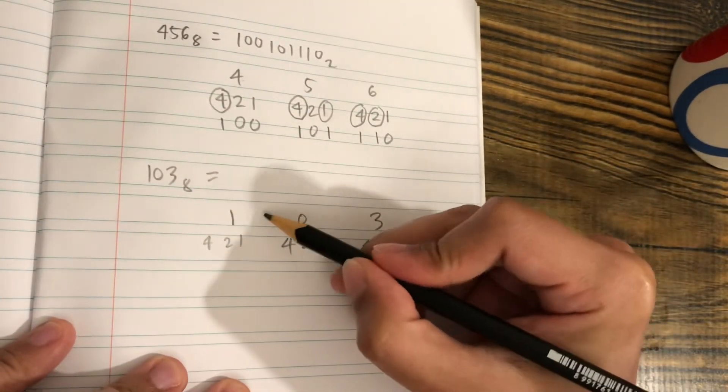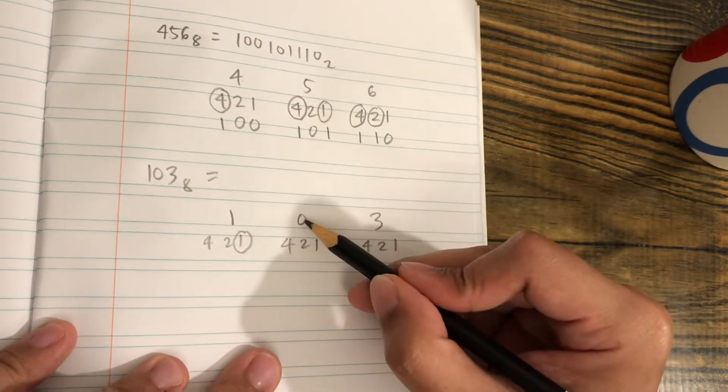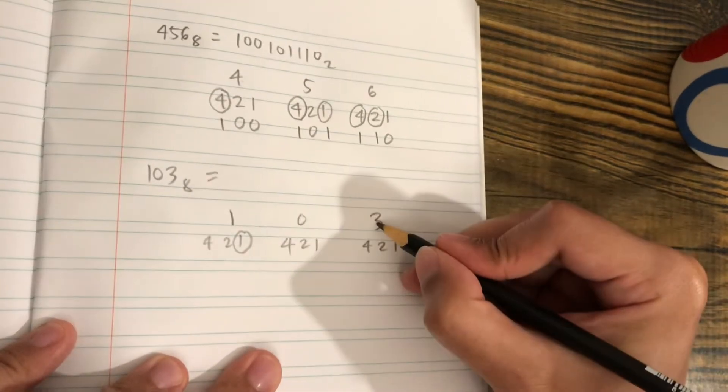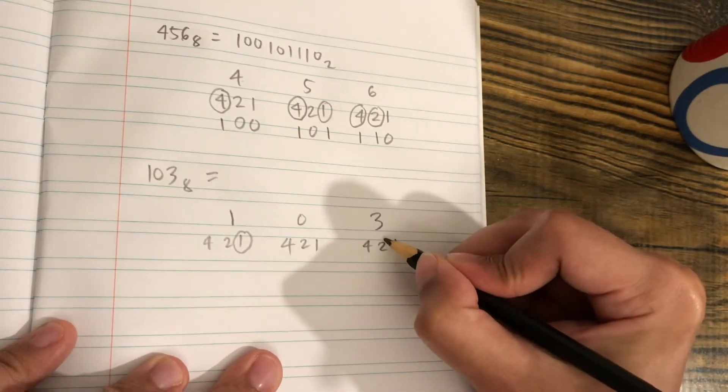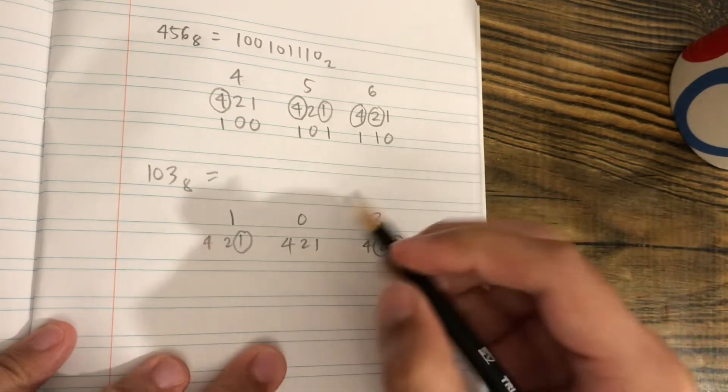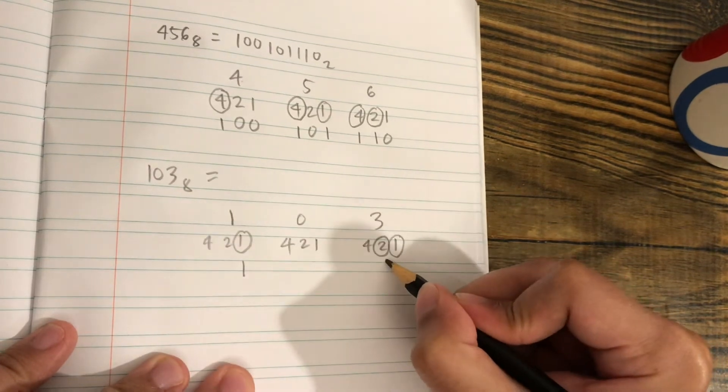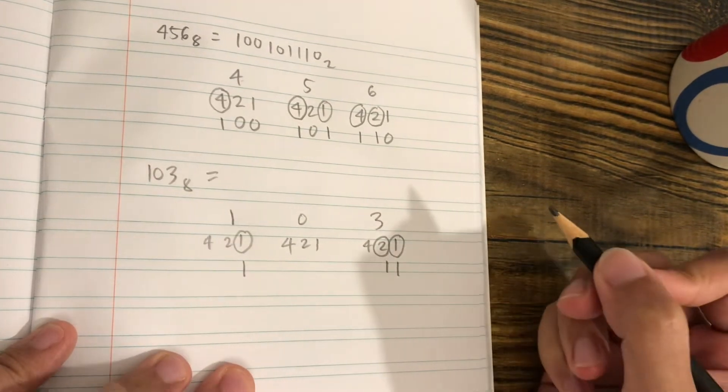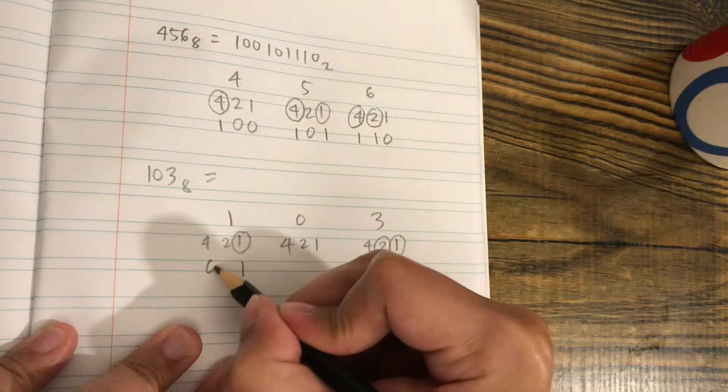Let's see: 1 is this one. For 0, there's no values here. 3 is the sum of 2 and 1. So put 1 here, 1 here, 1, and then 0 below the other numbers.